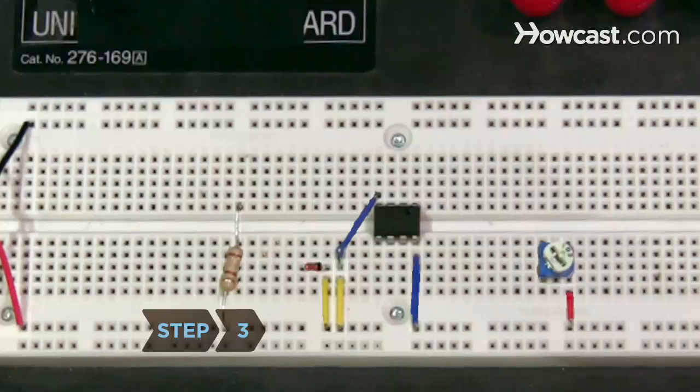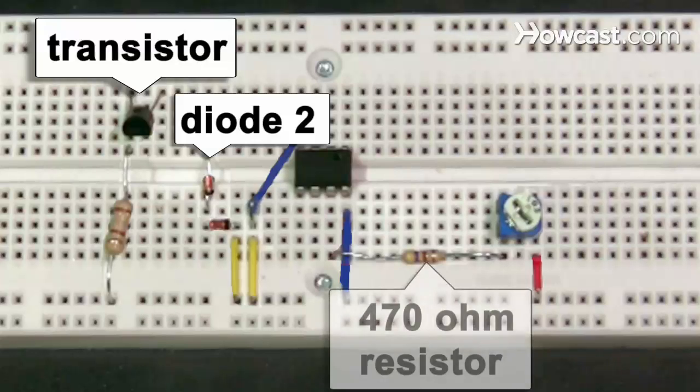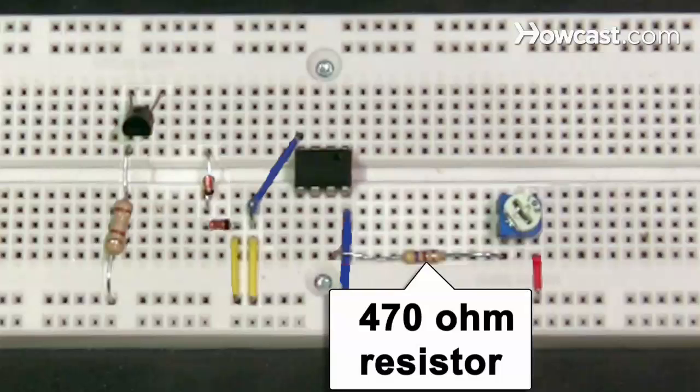Step 3: Connect the 180-ohm resistor to the transistor. Connect the diode directly to another diode. Then, connect the 10K variable resistor to the 470-ohm resistor.